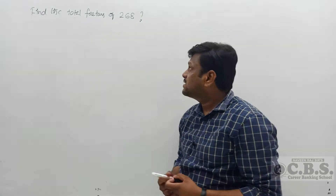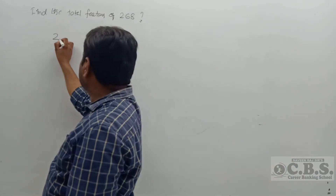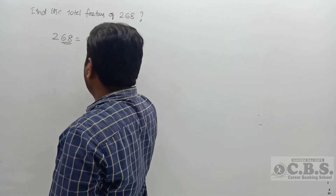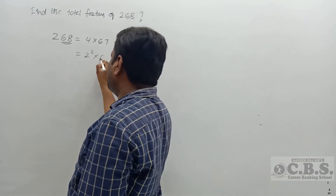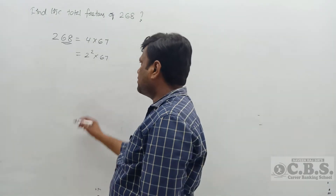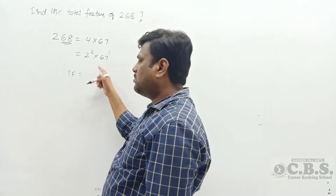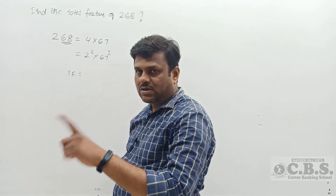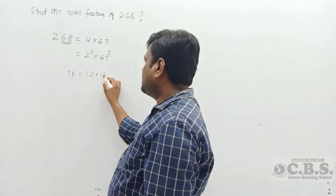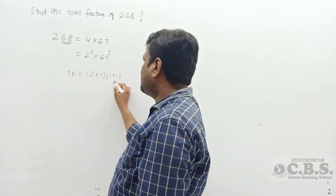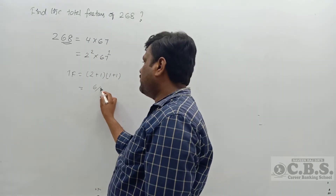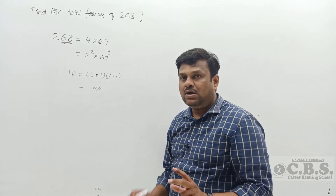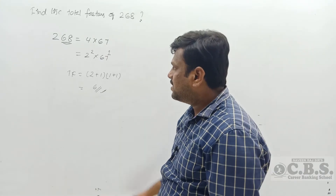Find the total factors of 268. 268 = 4 × 67 = 2² × 67. 67 is a prime number. Is it a perfect square? No, because the power of 67 is 1, which is not even. Total factors: (2+1)(1+1) = 3 × 2 = 6. Total factors is even, so it is not a perfect square. 268 contains 6 factors. Rule: if total factors is odd → perfect square; if even → not a perfect square.